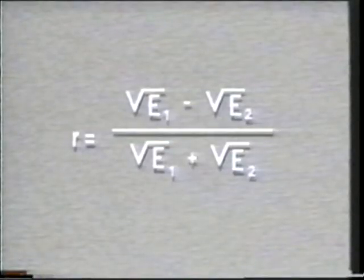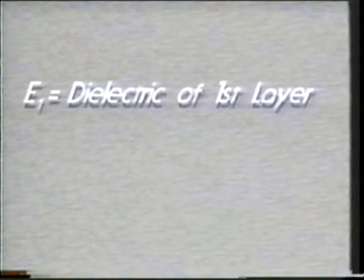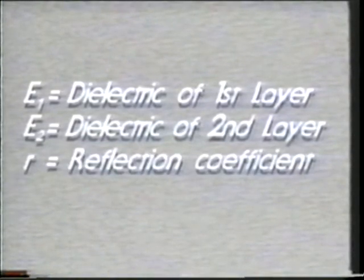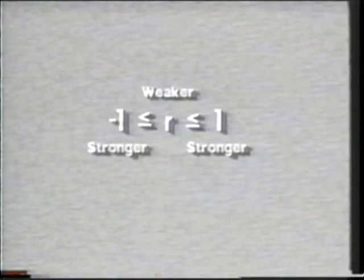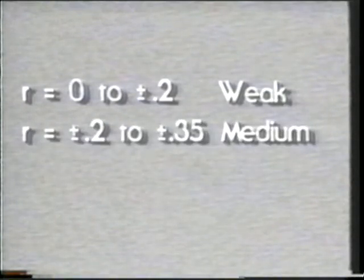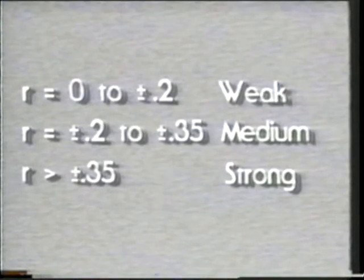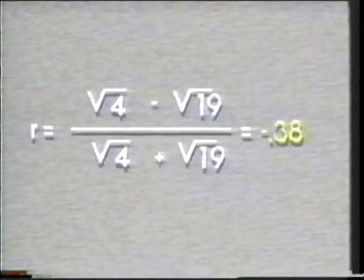Let's review the reflection coefficient equation, where e-sub-1 equals the dielectric of the first layer, e-sub-2 equals the dielectric of the second layer, and r equals the reflection coefficient. For our example of dry sand to loam, the reflection coefficient ranges from 0 to 1 and 0 to minus 1. The closer to 1 or minus 1, the stronger the reflection; the closer to 0, the weaker the reflection. A reflection coefficient of 0 to plus or minus 0.2 is a weak response; plus or minus 0.2 to 0.35 is a medium response; and greater than plus or minus 0.35 is a strong response. Our example of dry sand to loam will produce a relatively strong signal response.